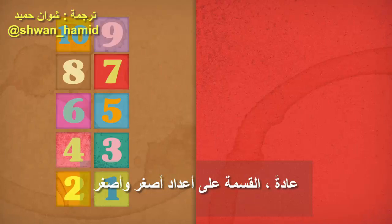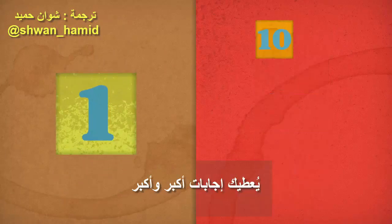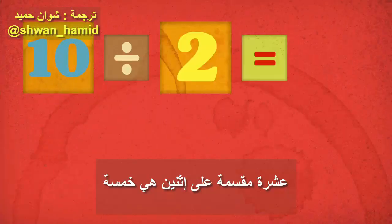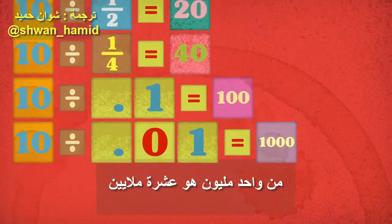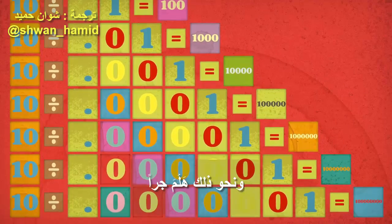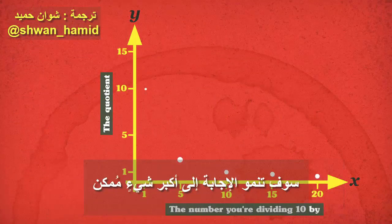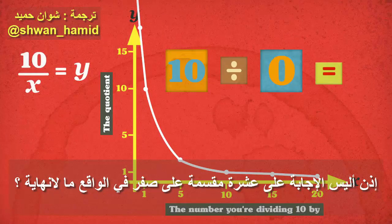Normally, dividing by smaller and smaller numbers gives you bigger and bigger answers. 10 divided by 2 is 5, by 1 is 10, by 1 millionth is 10 million, and so on. So it seems like if you divide by numbers that keep shrinking all the way down to zero, the answer will grow to the largest thing possible. Then isn't the answer to 10 divided by zero actually infinity?